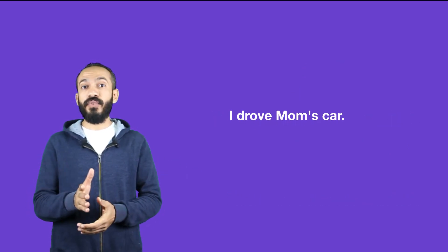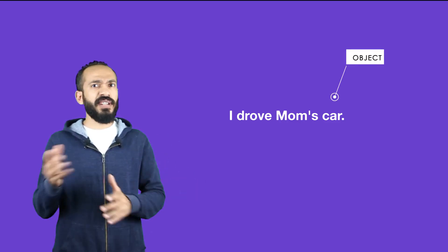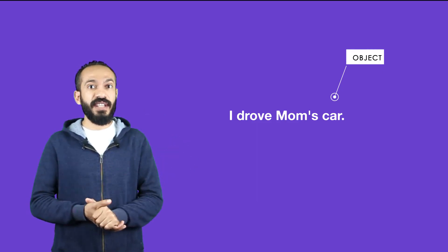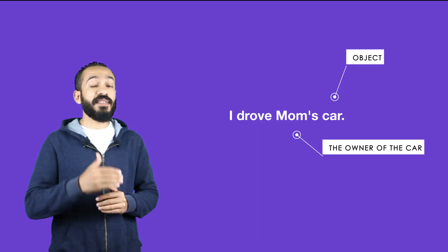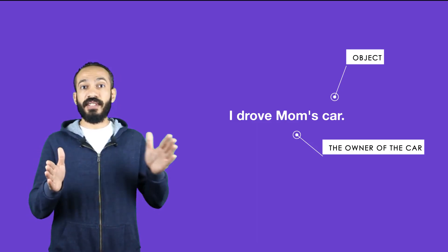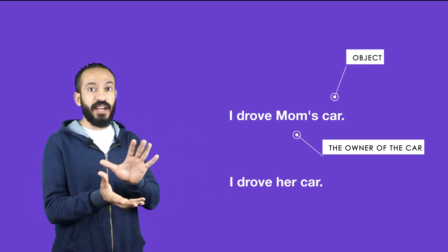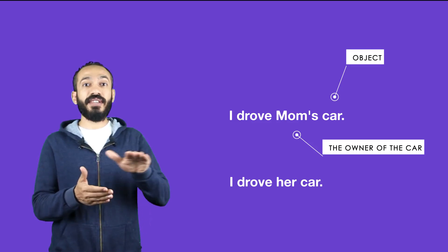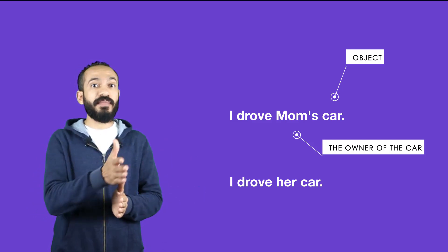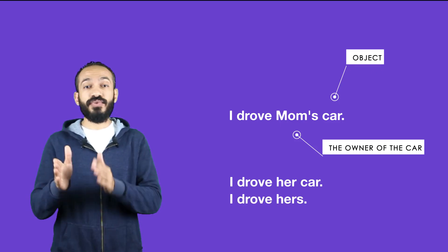Here's another example: I drove mom's car. Mom's here is not the object of the sentence — the car is the object. What did I drive? The car. The word mom is the possessive noun that owns the car. Let's try to remove mom and replace it with a possessive adjective: I drove mom's car — I drove her car. What if I want to remove the possessive noun 'mom's' and the thing that it owns, which is the car? In that case, I'm going to remove 'mom's car' altogether and use a possessive pronoun: I drove hers.